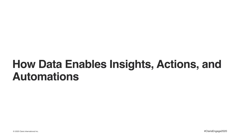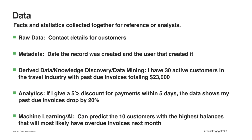So you have your data in order and you're ready to use it to further transform your organization. Let's talk about different types of data. You have raw data such as contact details for customers. Then you might have metadata — the date the record was created and the user that created it. And then derived data: knowledge discovery, data mining. For example, knowing you have 30 active customers in the travel industry with past due invoices totaling $23,000 is pretty important. From analytics, if you give a 5% discount for payments within five days, the data shows past due invoices drop by 20%. And with machine learning and AI, you can predict the 10 customers with the highest balances most likely to have overdue invoices next month.